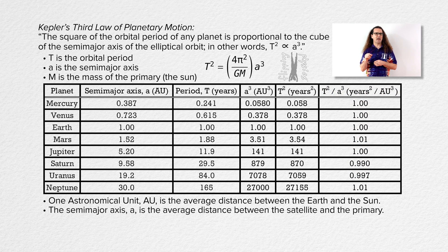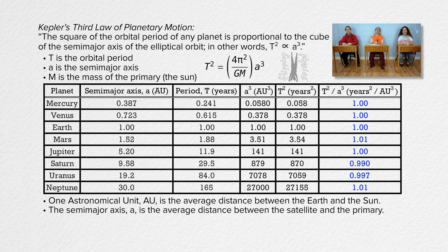Hopefully you can see that for all the planets, they each have roughly the same value for orbital period squared over semi-major axis cubed. Whoa, that is amazing — they all equal almost one. That is amazing!